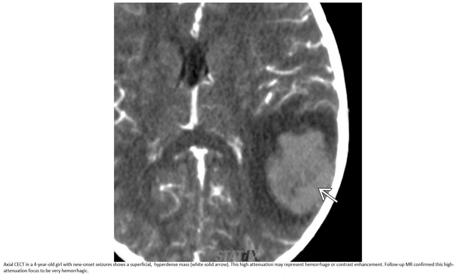Enhanced CT in a four-year-old with new onset seizure shows a supratentorial hyperdense lesion. This hyperdensity may represent hemorrhage, with enhancement. This high-attenuation focus is likely hemorrhagic in nature.